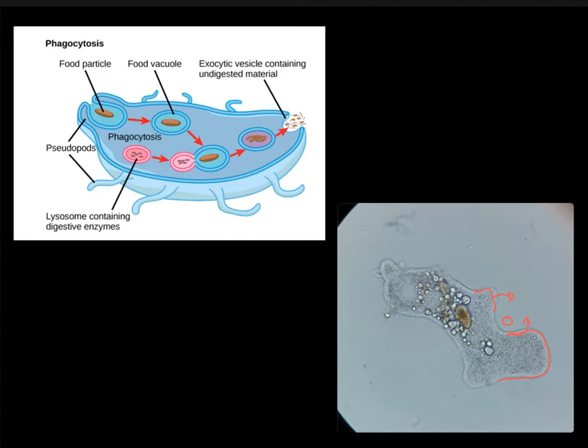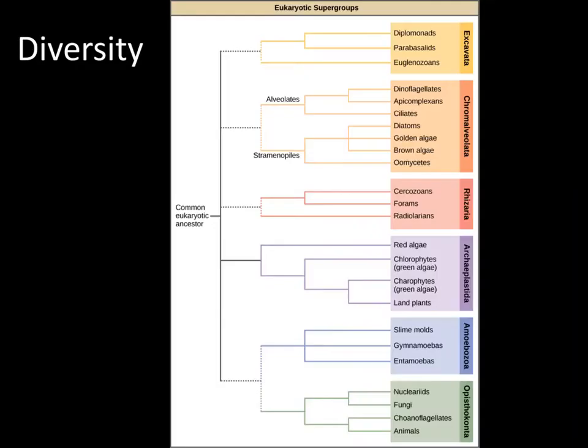Some of the protists either reproduce asexually through binary fission. You also have protists that reproduce sexually through meiosis and fertilization. Just understand that there is either asexual or sexual reproduction.